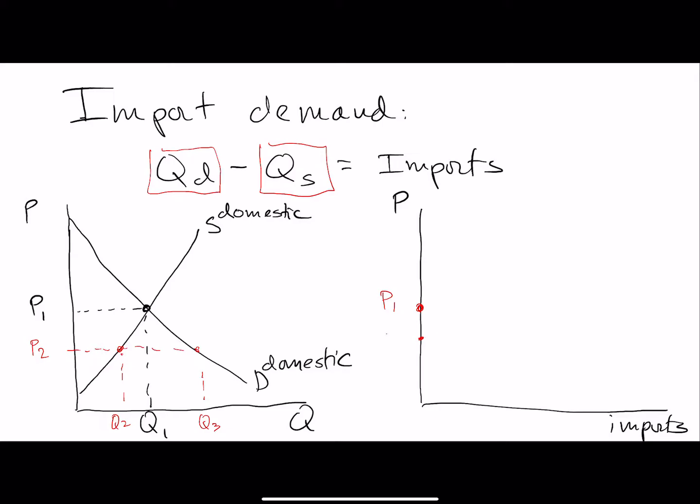If we translate that over into this graph, at P2 what we get is a level of imports where these imports that I've drawn here is equal to Q3 minus Q2. At that price you will import that amount. If you put all the possible combinations together, you're going to get an import demand curve where the vertical axis is the autarky price for this country.